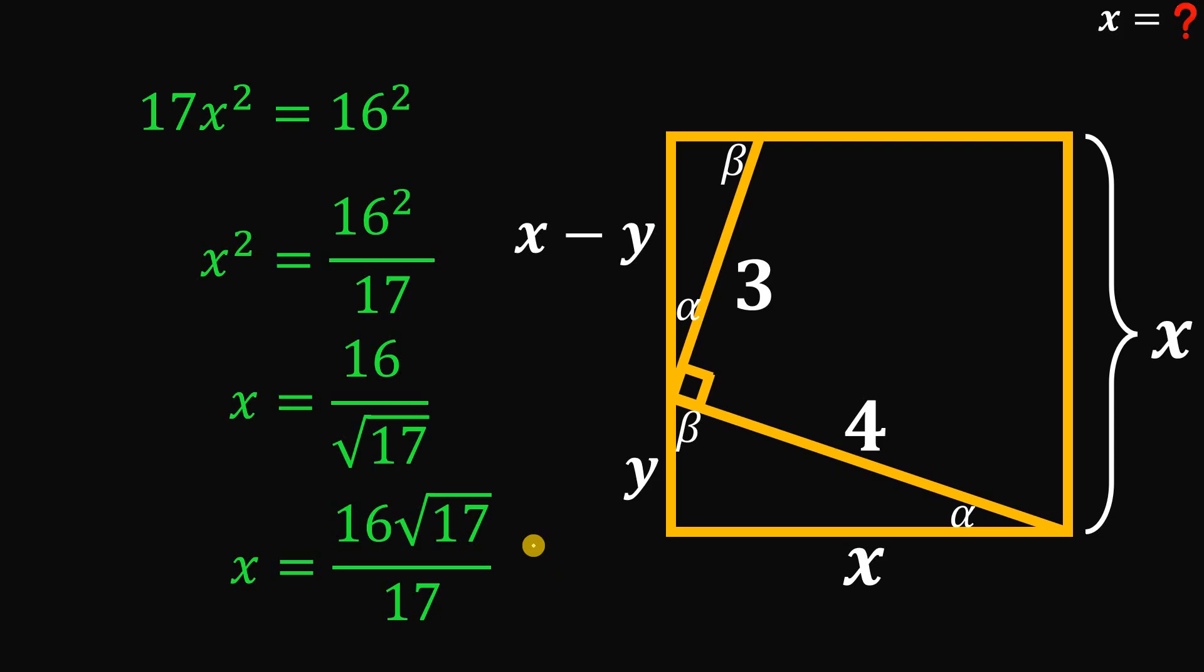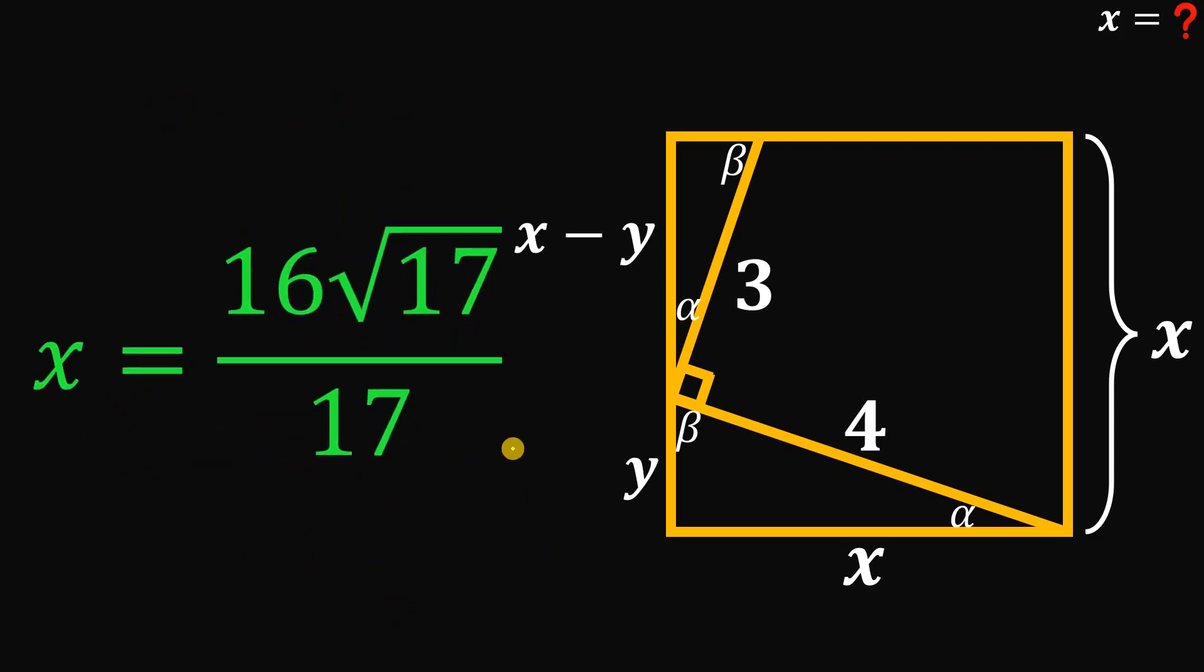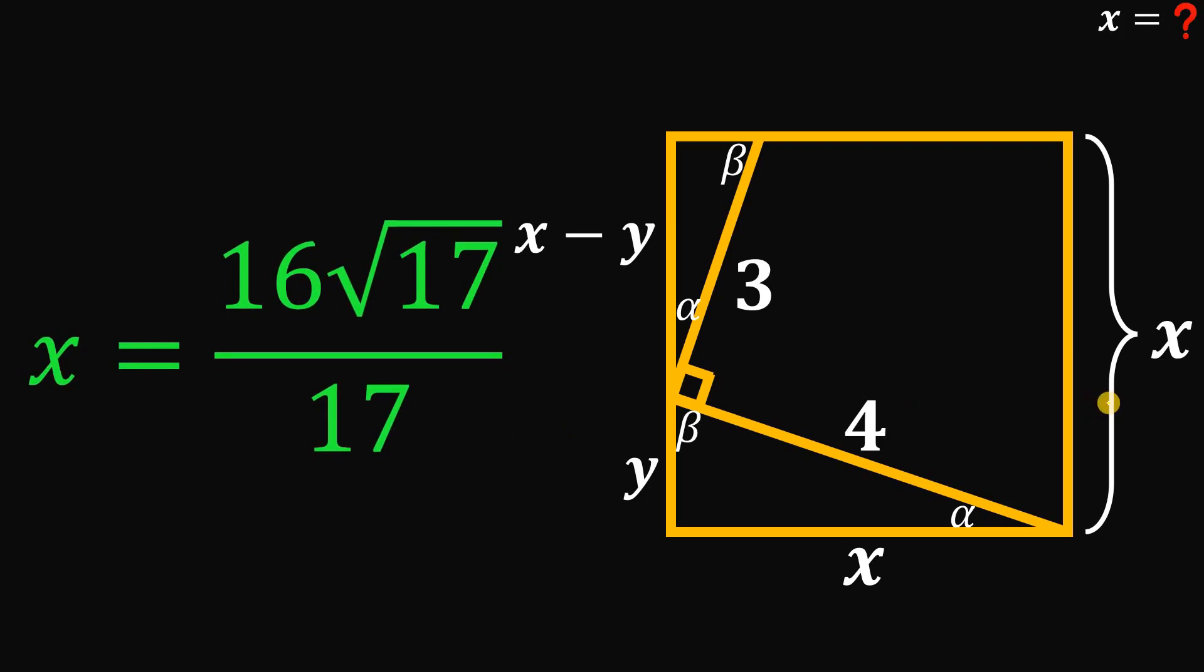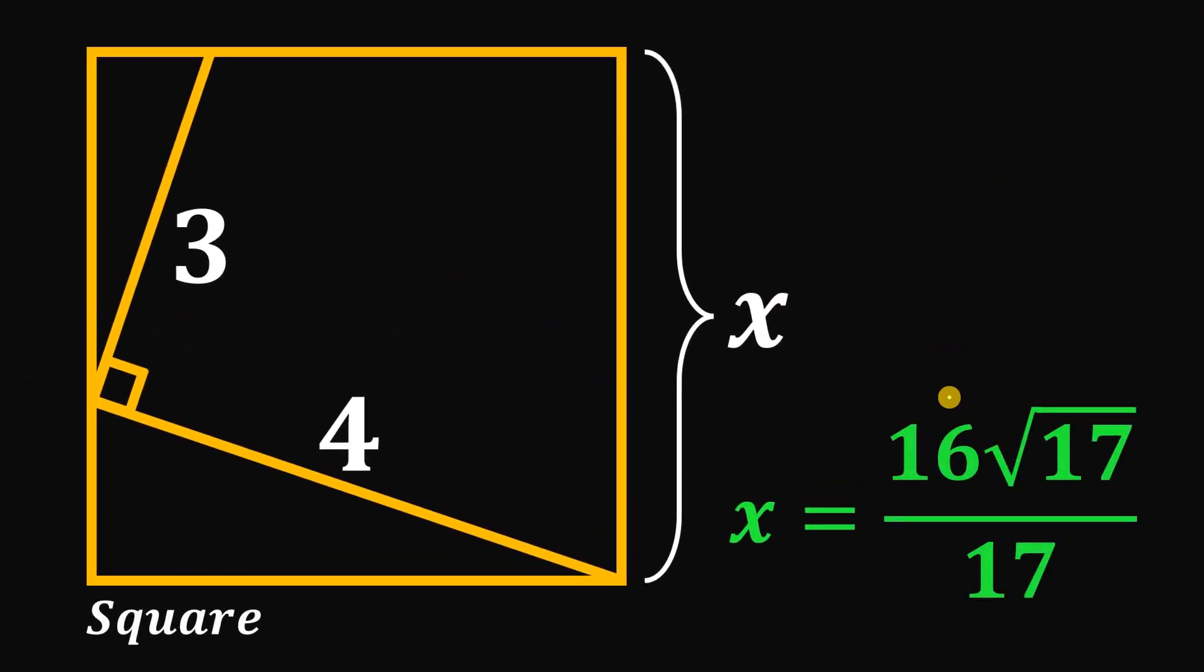And that is the value of x or the side length of this square. Therefore, given this figure, the side of the square is just 16 times square root of 17 all over 17 units. And as always, we are done.